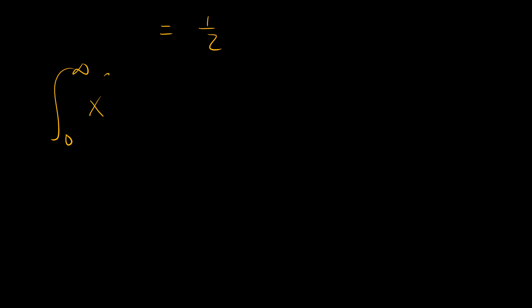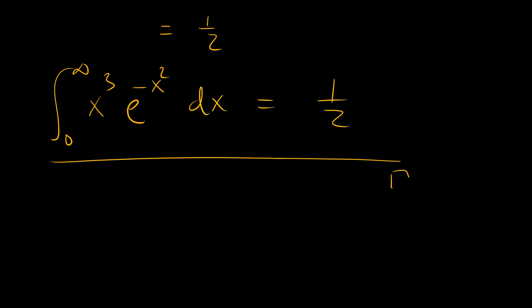So the integral from 0 to infinity of x to the power 3 times e to the power negative x squared leads us to one-half. That is the first method we could use to solve this problem.